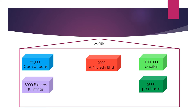After the third transaction, the business has 100,000 capital, 92,000 cash at bank, 8,000 fixtures and fittings, 2,000 debt to supplier, and 2,000 of expenses. If you do the calculations, the accounting equation must balance.